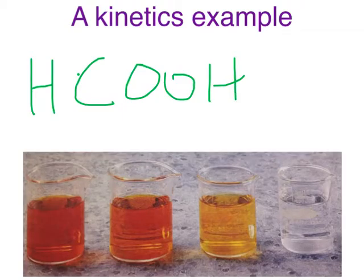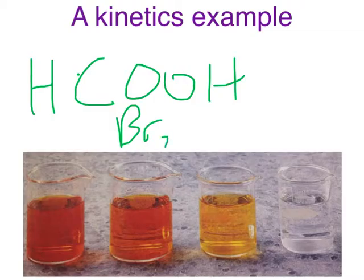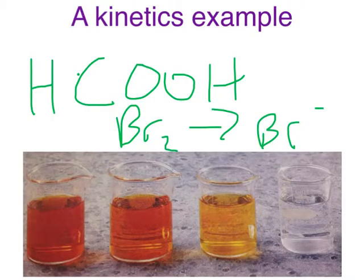So bromine is reacting with that, and over time, Br2 is turning into Br minus. Note that during that time, there's a color change. So from here, we would have a known concentration, and over here, we would know that the concentration of this would be zero. So we could measure that. And of course, we could time how long it took to do that. And once we had those two values, we can then calculate how quickly the reaction happened.